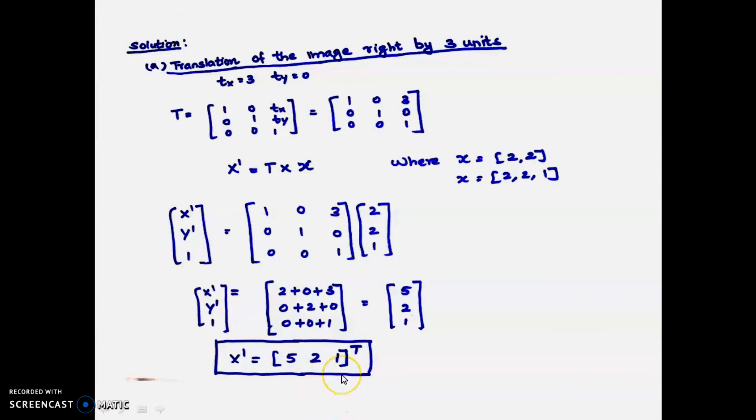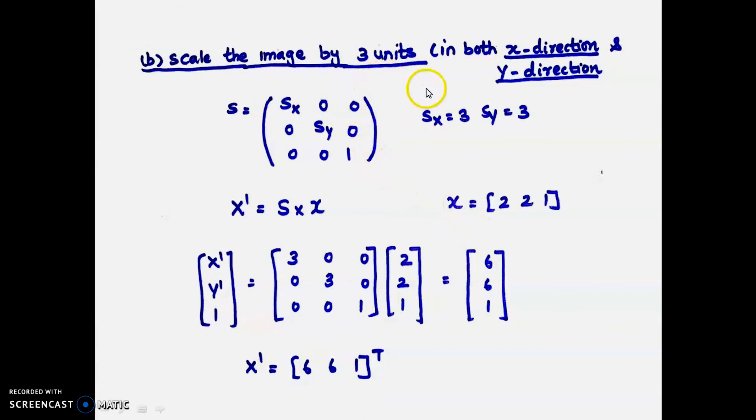Next is scale the image by 3 units in both x and y direction. The scaling matrix is [sx 0 0; 0 sy 0; 0 0 1] - diagonal with sx, sy, 1, and all other components are 0. sx = 3 and sy = 3, so this is the scaling transformation matrix.